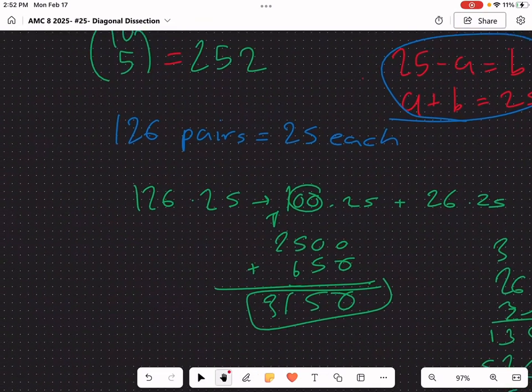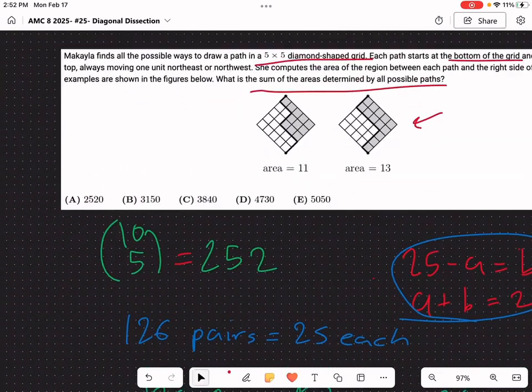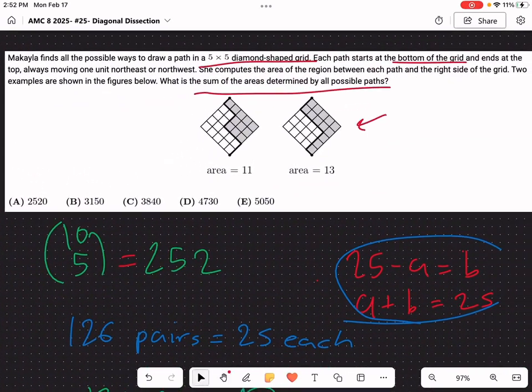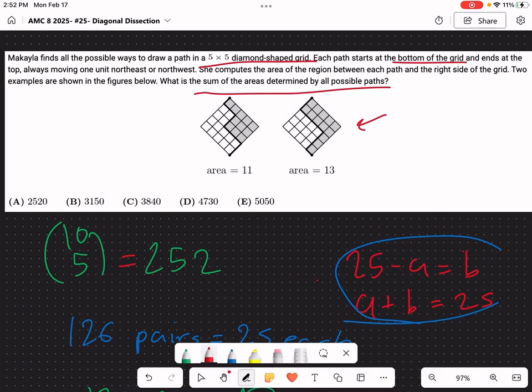So that's the total area of all possible paths, right? And let's scroll all the way up and sure enough, answer B, it's the final answer we got, 3150.